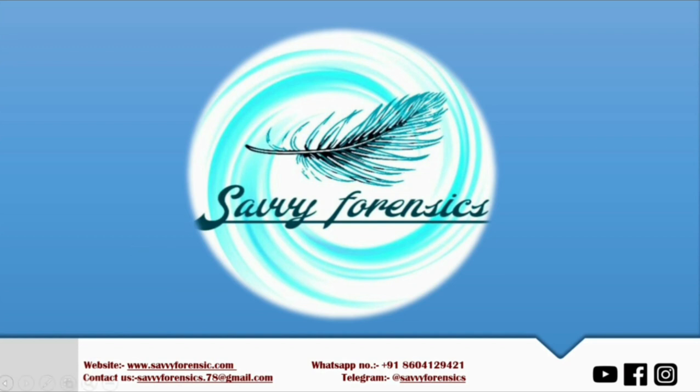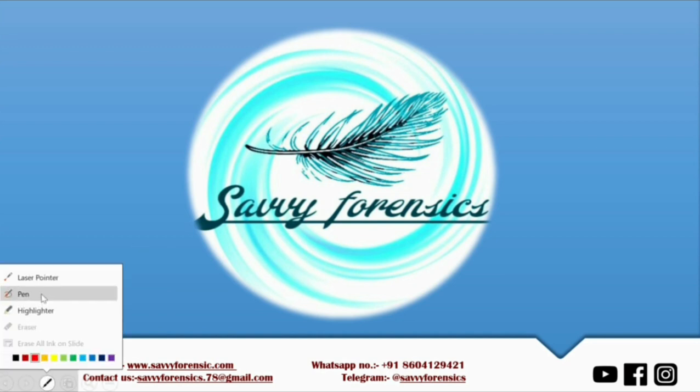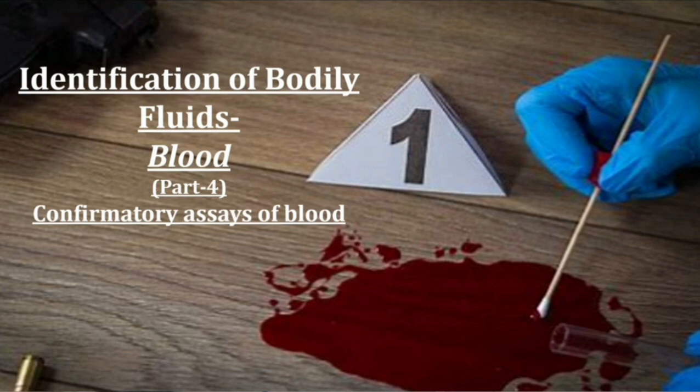Welcome back to Savvy Forensics. This is the fourth part of the identification of bodily fluids - blood. In this video we'll be discussing the confirmatory assays carried out for the identification of blood. In previous videos we looked at preliminary identification of blood, false positive and false negative results, and how to resolve those cases. If you haven't watched those videos, please do have a look so you can understand the further concepts more clearly.